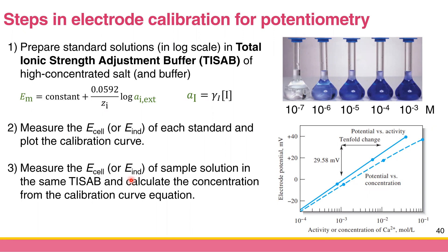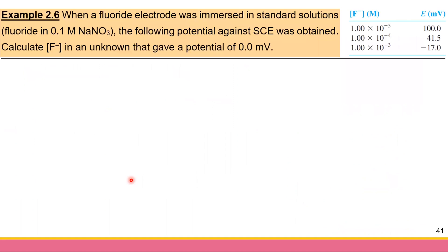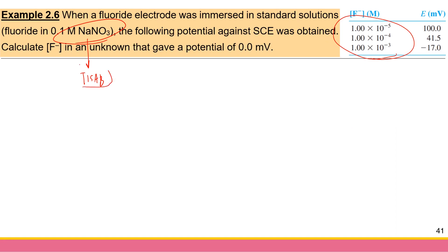For the last example: a fluoride electrode was immersed in standard solutions of fluoride in 0.1 M sodium nitrate, and the potential against a calomel electrode was recorded. The unknown gives a potential of 0 mV — calculate the fluoride concentration. The 0.1 M sodium nitrate is our TISAP; it is much higher in concentration than the fluoride analyte, which ranges from 10⁻⁵ to 10⁻³ M.